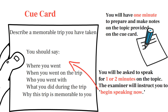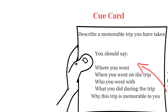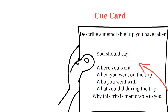Here's an example of a cue card for IELTS Speaking Part 2. Topic: Describe a memorable trip you have taken. You should say: where you went, when you went on the trip, who you went with, what you did during the trip, and why this trip is memorable to you.